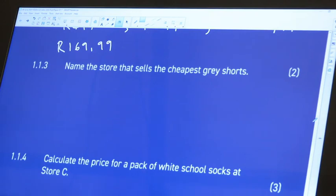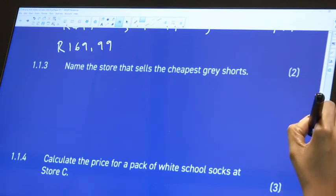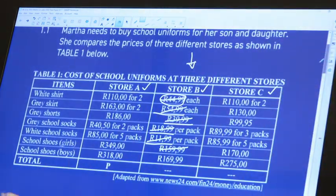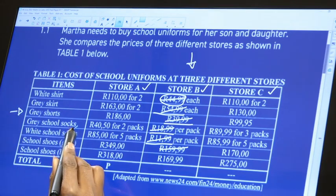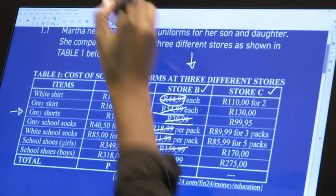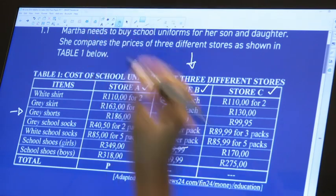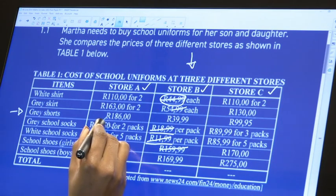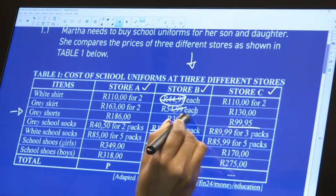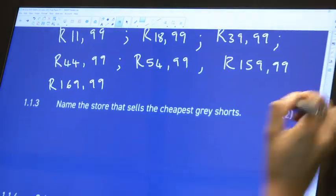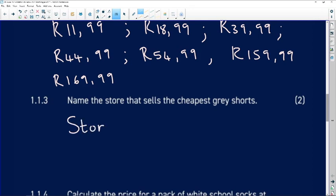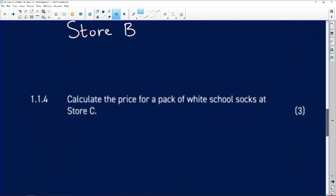It says name the store that sells the cheapest grey shorts. Let us go to the cheapest grey shorts. First we would look for shorts, and when we want to look at the cheapest, the cheapest grey shorts would not be that and would not be that because this is the smallest number, so the cheapest grey shorts would be Store B. Cheapest means lowest as well. Whenever you see a mark allocation of two, you know you're not going to be doing too much calculations and you are basically just rewriting whatever is being asked.